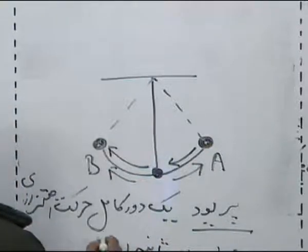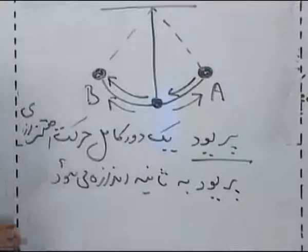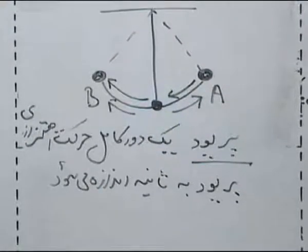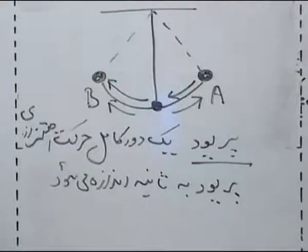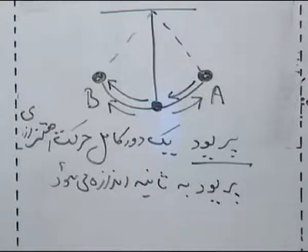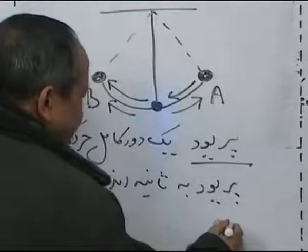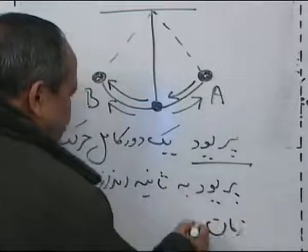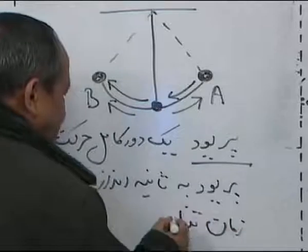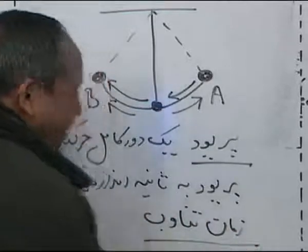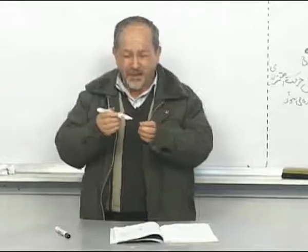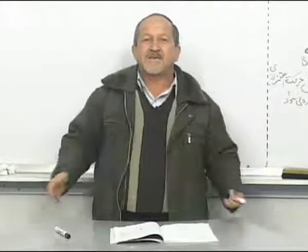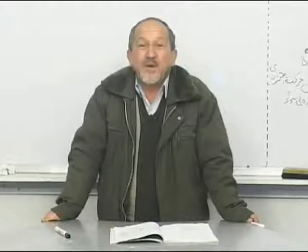If you remember, dear friends, the period is the time for one complete cycle. What is the period? The period is the time of one complete oscillation. In terms of period or time, the period is measured in units of time.